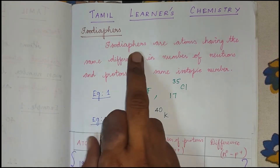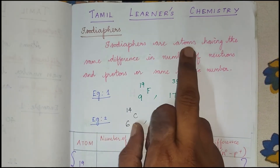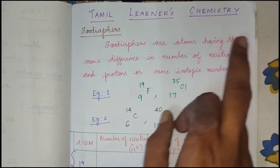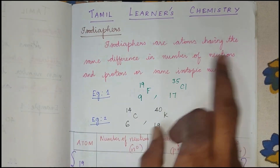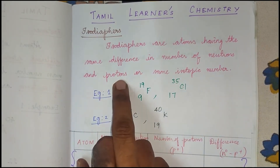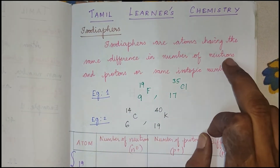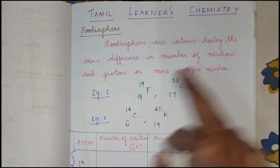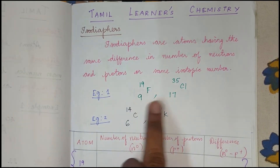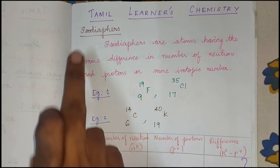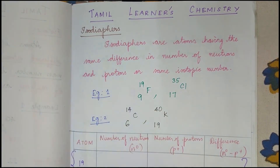Iso-diaphors are atoms having the same difference in the number of neutrons and protons. The number of neutrons minus the number of protons gives the answer for iso-diaphors.